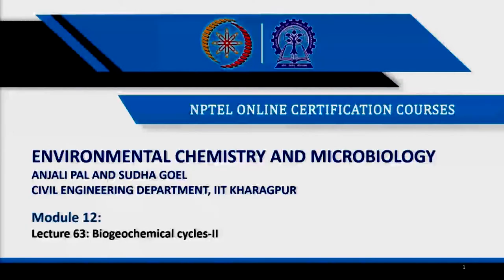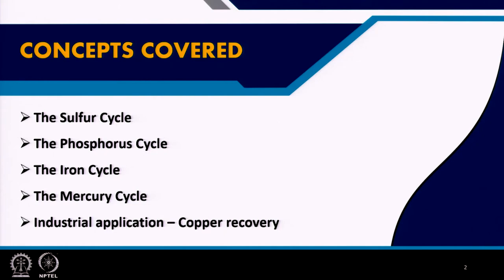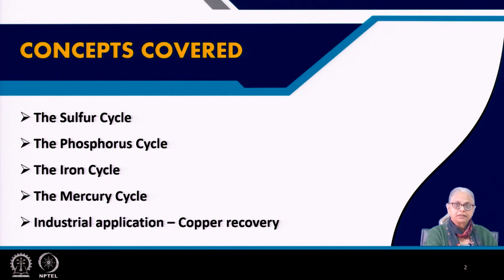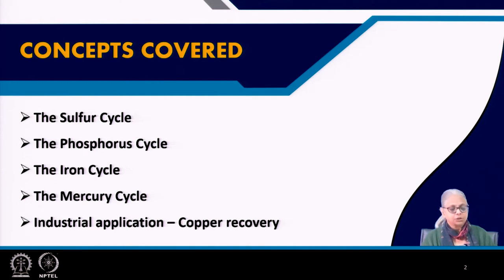Welcome everyone. This is the last and final lecture of our course — the second part of Biogeochemical Cycles. This is Lecture 63 of Module 12. In this particular part, we are going to cover the sulfur cycle, phosphorus, iron, mercury, and one industrial application where we are going to look at how copper can be recovered by a series of chemical and biological reactions.